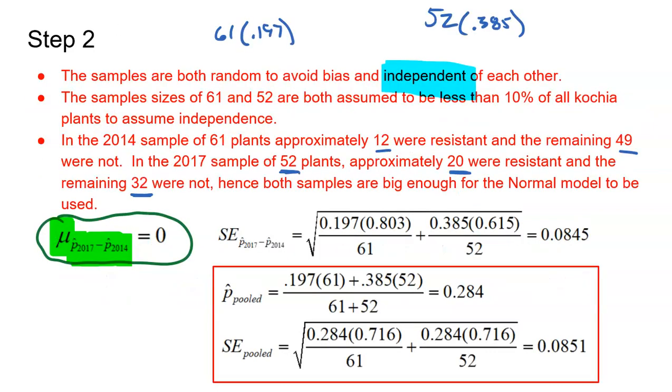Now here's where you could potentially have two different things. Both would be fully correct on the AP exam. We could have our standard error. Standard error is because we don't know the true proportions. If I use the 2014 data, 0.197 and the opposite 0.803, sample size 61, and the 2017 data, 0.385 was my sample proportion, 0.615 was the opposite, sample size 52. I get a standard error of 0.0845. Totally a fine value to use.